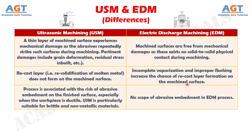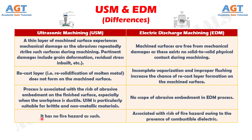Difference number 13: Ultrasonic machining process is associated with the risk of abrasive embedment on the finished surface, especially when the workpiece is ductile. Ultrasonic machining is particularly suitable for brittle and non-metallic materials, whereas there is no scope of abrasive embedment in electric discharge machining process. Difference number 14: Ultrasonic machining has no fire hazard as such, whereas electric discharge machining is associated with the risk of fire hazard owing to the presence of combustible dielectric.